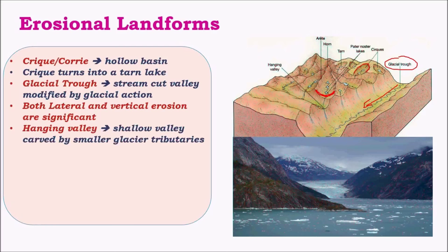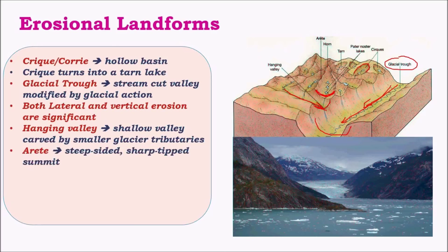Hanging valleys are valleys present for smaller tributaries. The major glacial trough is a large extended U-shaped valley, whereas the tributary valley is also U-shaped but sits at a higher terrain compared to the main glacial trough — hence it is called a hanging valley.